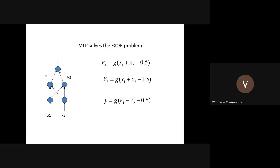Consider a multi-layer perceptron with an input layer, one hidden layer with only two neurons, and an output layer. Treating all neurons as McCulloch-Pitts neurons: v1 equals g(x1 + x2 − 0.5), where g is the step function — this is like an OR gate. v2 equals g(x1 + x2 − 1.5) — this is like an AND gate. The output y is given as g(v1 − v2 − 0.5). Combining these two, you can show this implements the XOR gate.